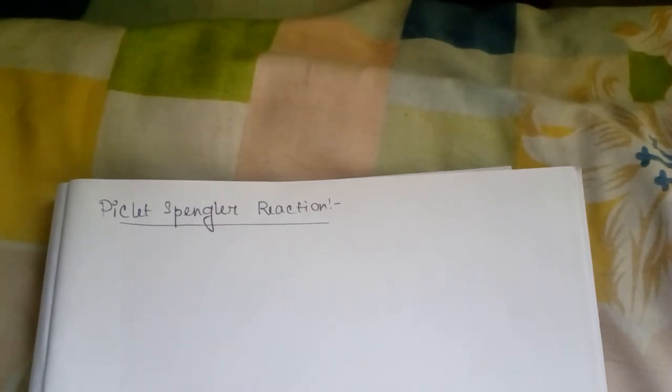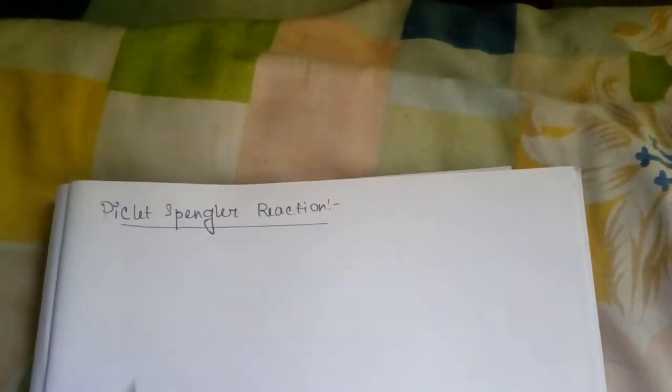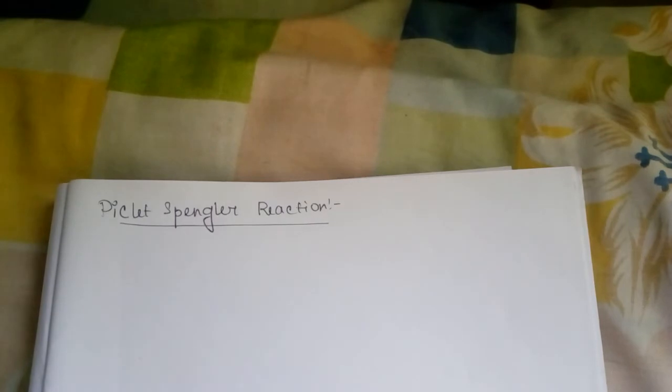Now we will go to the sequence of the reaction. Beta phenyl ethylamine will react with aldehyde in presence of acid, then the product formed was aromatized by palladium carbon or sulfur or selenium and our required product of one alkyl derivative of isoquinoline will form.